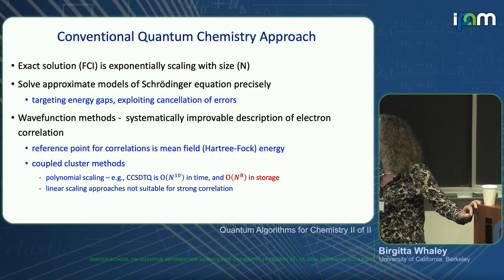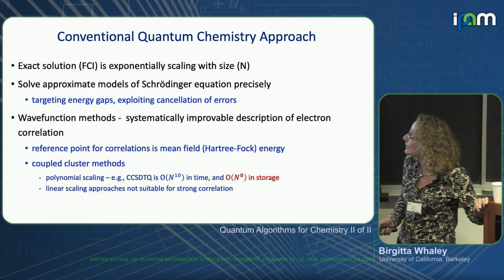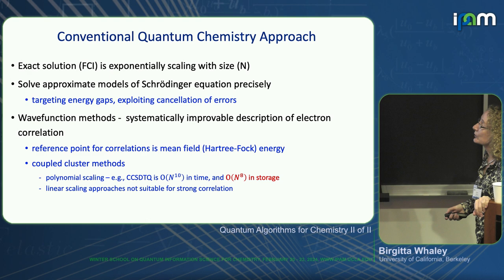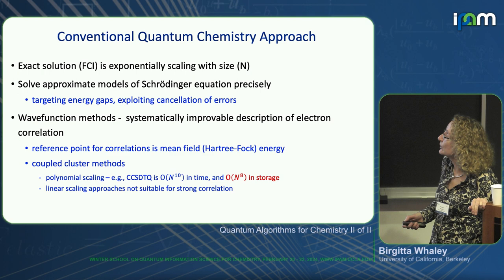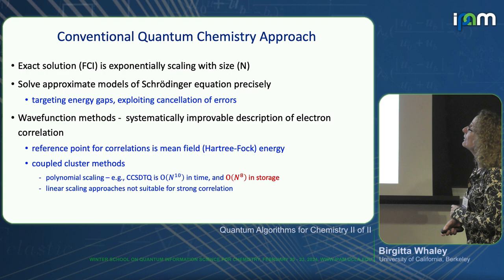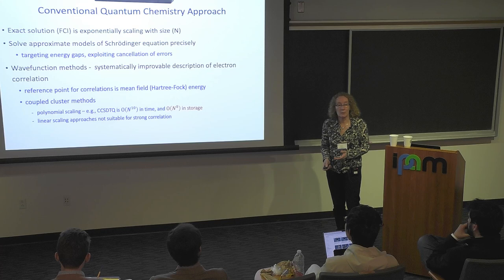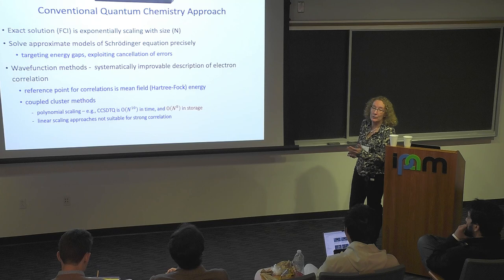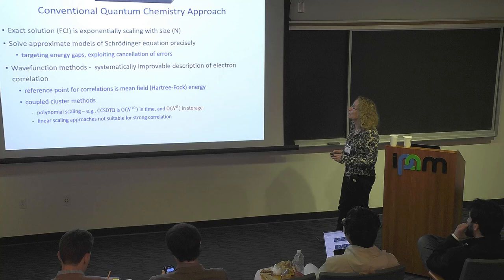Quantum chemistry as we know it today is all about solving approximate models of the Schrödinger equation. Instead of the exact solution, one constructs some approximate model and tries to solve it as precisely as possible. Typically you also target energy gaps and exploit cancellation of errors. Typical approximate models include coupled cluster and density functional theory.